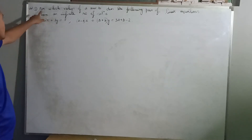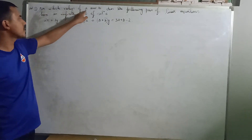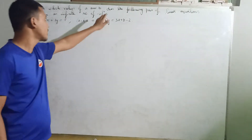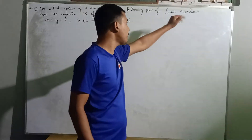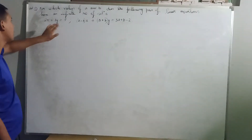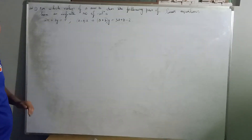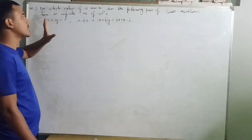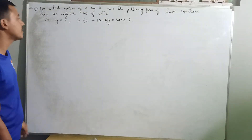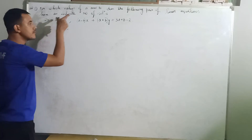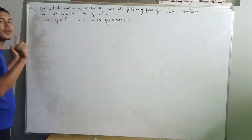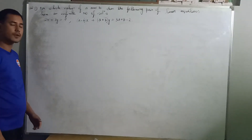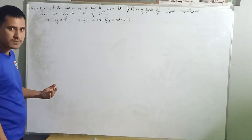Roman 1 first. For which values of A and B? We are asked to find A and B so that the following pair of linear equations has an infinite number of solutions. We need to determine A and B, and the given condition is that this given pair of equations has an infinite number of solutions. We already know the condition for infinite number of solutions, which we have learned in the previous video.